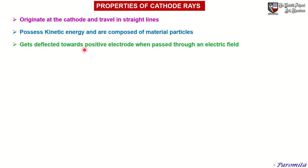Cathode rays get deflected towards the positive electrode when passed through an electric field. When an electric field is applied to a stream of cathode rays, they deviate from their normal path and get inclined towards the positive electrode. This deflection of cathode rays towards the positive plate clearly indicates that these rays are negatively charged.